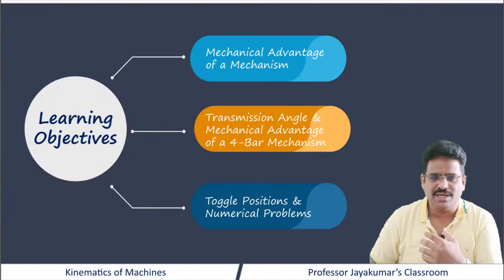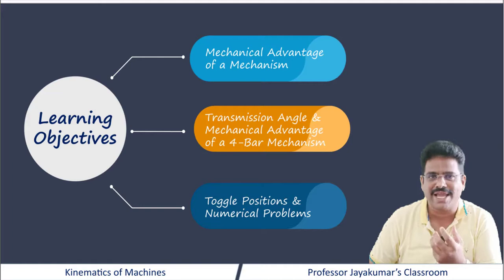These are the learning objectives. We will be dealing with mechanical advantage of a mechanism, the effect of transmission angle on mechanical advantage, and finally toggle positions and their significance in a 4-bar mechanism.